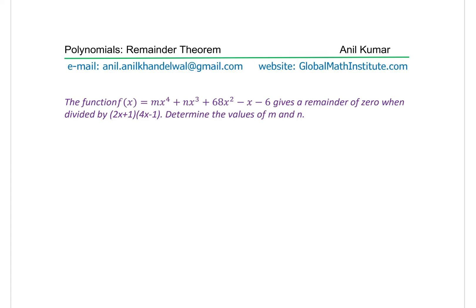Here is a brilliant question from one of our subscribers, Morgan Smith. I hope its solution will help many others. This question is based on polynomials and the remainder theorem. The function f(x) equals m·x⁴ + n·x³ + 68x² - x - 6 gives a remainder of 0 when divided by (2x + 1)(4x - 1). Determine the values of m and n.